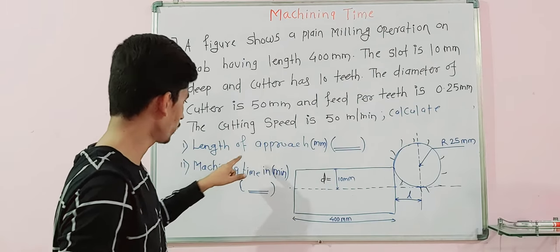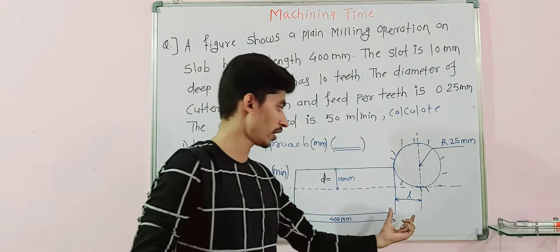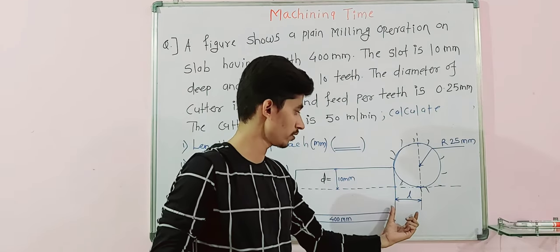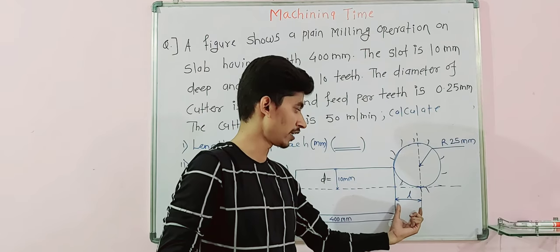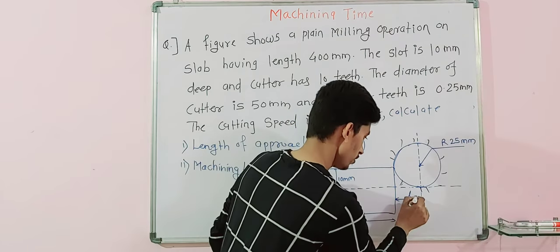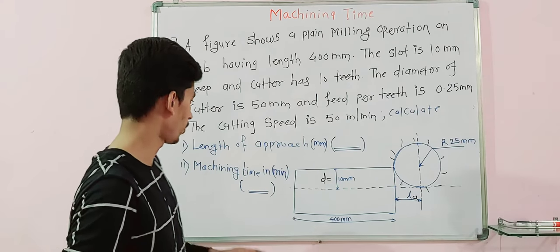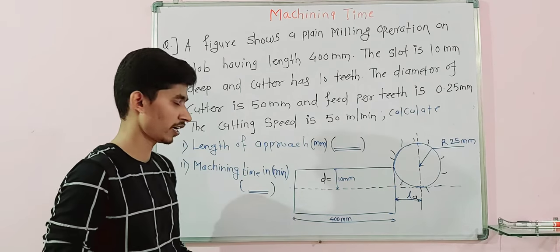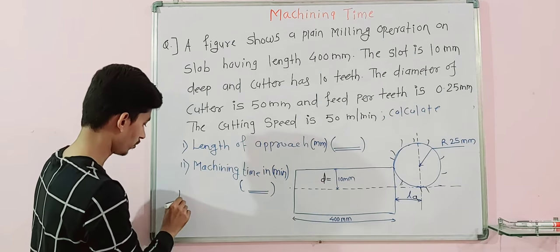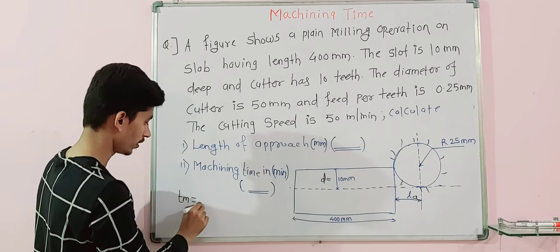We need to calculate two things. First, the length of approach in mm — that is the length before the cutting operation or milling operation begins. Second, the machining time in minutes — we have to calculate what machining time is required for this particular operation.